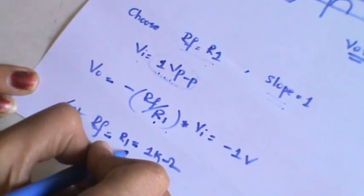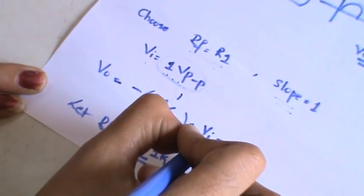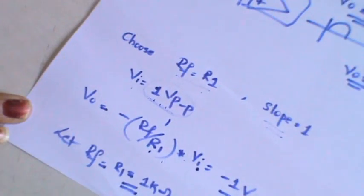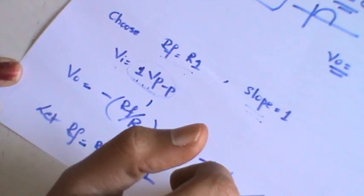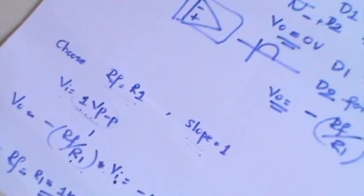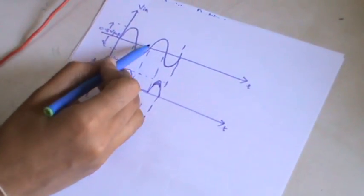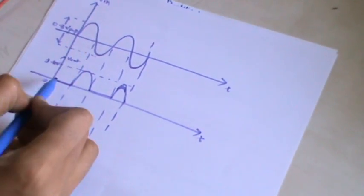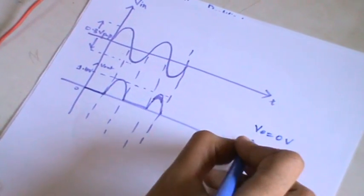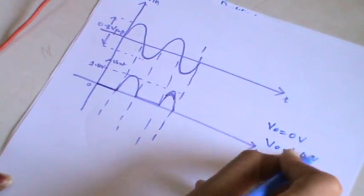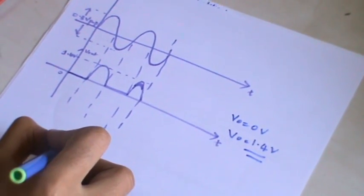Take it as 1 volt peak to peak. RF by R1, since I am considering as 1 kilo ohm, it will be minus 1 into 1 volt peak to peak. You will get the answer as 1 volt. For 1 volt peak to peak the output you get is minus 1 volt. If I show it in the waveform, 0.3 volt is the peak to peak. Positive supply you are getting V0 as 0 volt, whereas for the negative supply you are getting V0 as 1.3 volt.